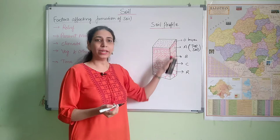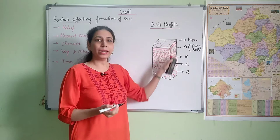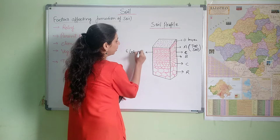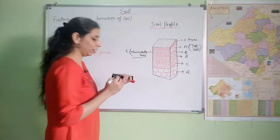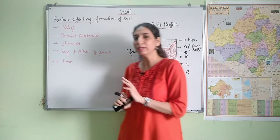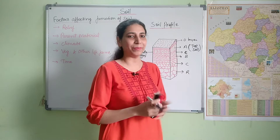After A comes the B layer, and then after B there is the C layer. Between A and B there is also an E layer. The E layer is also known as the eluviated layer or the zone of eluviation. You may have heard of laterite soil — in laterite soil, the leaching process is very prominent. Leaching means the downward movement of dissolved minerals.